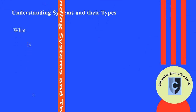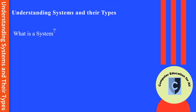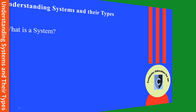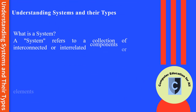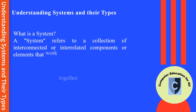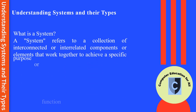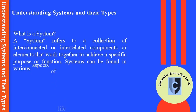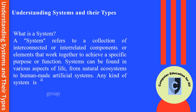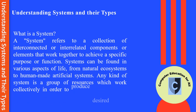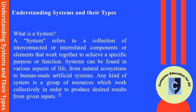What is a system? A system refers to a collection of interconnected or interrelated components or elements that work together to achieve a specific purpose or function. Any kind of system is a group of resources which work collectively in order to produce desired results from given inputs.